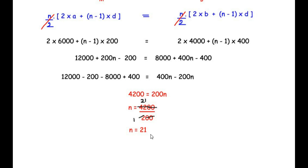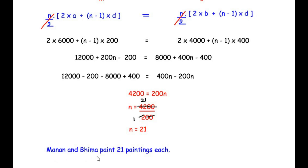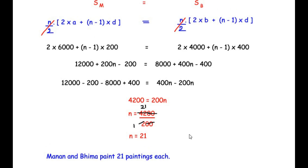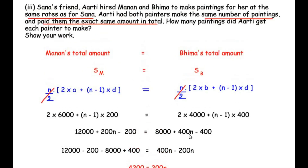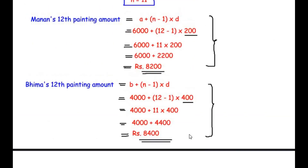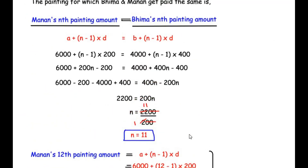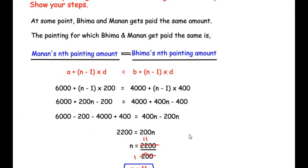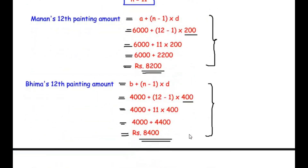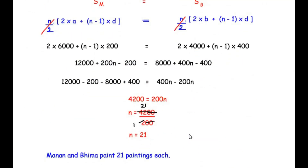So Manan will paint 21 paintings and Bhima will paint 21 paintings separately. I hope you understood all the steps and liked the video. If you know any other way of solving this example, do comment below. If you are liking my videos, like, share, and subscribe to my channel. Thank you for watching.